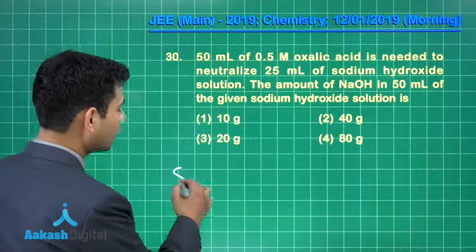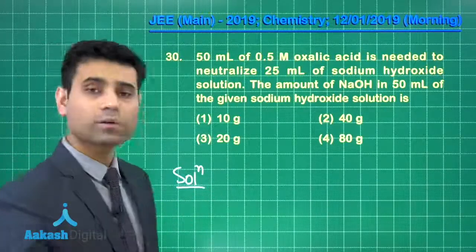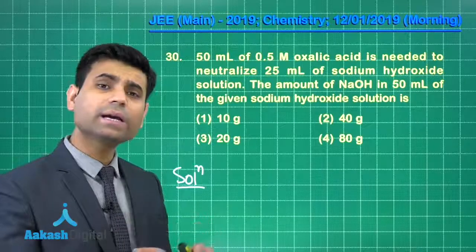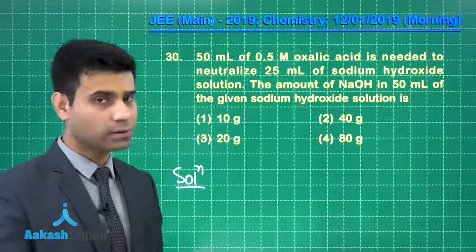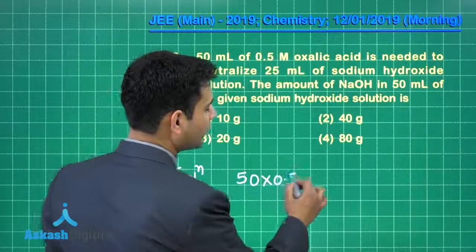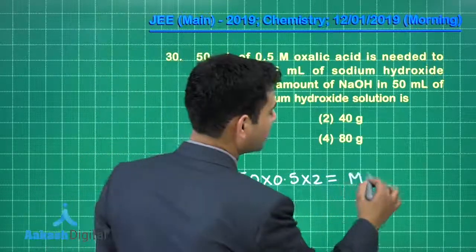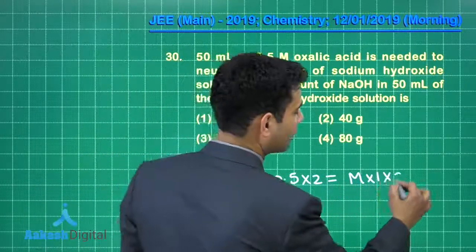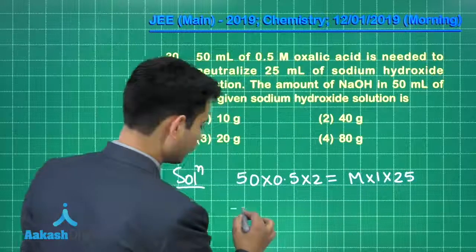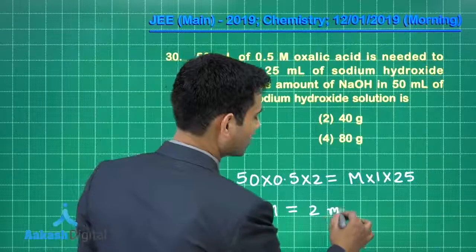Students, if I talk about this question, here we have 50 mL of 0.5 molar oxalic acid. So we can equate equivalence of acid equals equivalence of base. So 50 into 0.5 into its n factor equal to 2 equals molarity of sodium hydroxide into its n factor 1 and volume 25. So from here we have molarity equals 2 mole per liter.